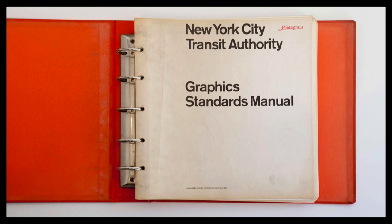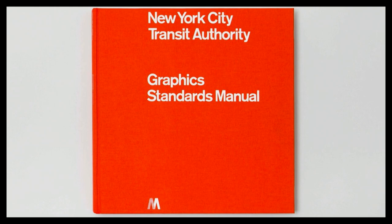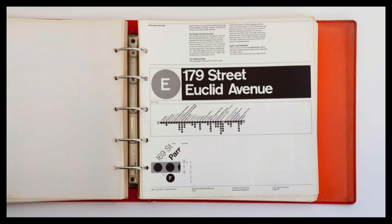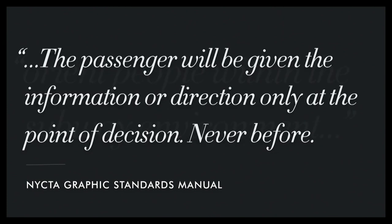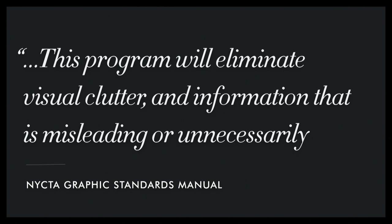The New York City Transit Authority Graphic Standards Manual is something many systems designers may be familiar with — it was reproduced by Jesse Reed and Hamish Smith in a very successful Kickstarter campaign. I love this one because it actually has the purpose written in the manual: 'The purpose is to orient people within the subway environment. The passenger will be given the information or direction only at the point of decision. Never before. Never after. The program will eliminate visual clutter and information that is misleading or unnecessarily repetitious.' The typefaces, the colors, the shapes — they all had a purpose. Just like Apple and just like McDonald's, it was all about removing anything unnecessary and guiding people as quickly as possible.